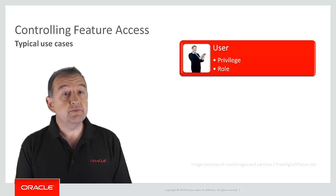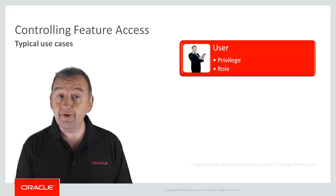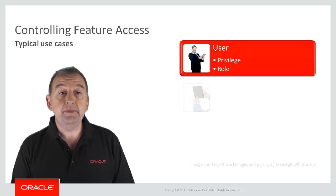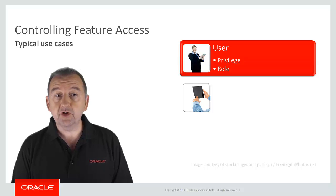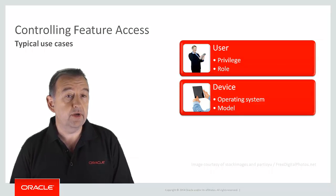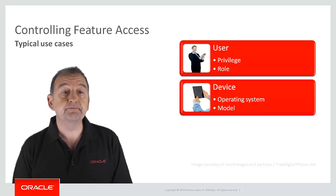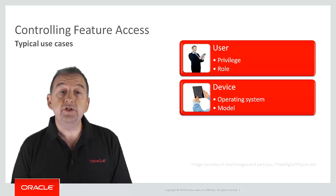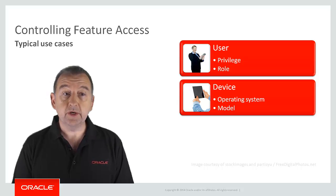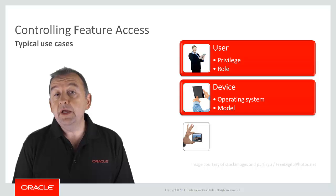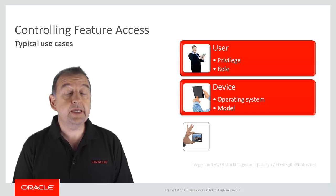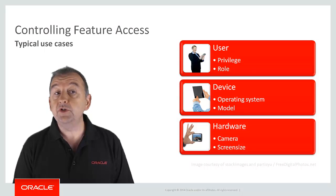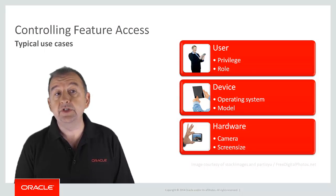You might want to restrict access based on information about the device. For example, if you're running on iOS, you may be able to offer different functionality from the same application compared to if it's running on an Android tablet. The third category for controlling access to features is based on the hardware. If the device has a camera, you may offer a feature which involves capturing information by taking a photograph, but if you don't have a camera, you obviously want to hide that feature.